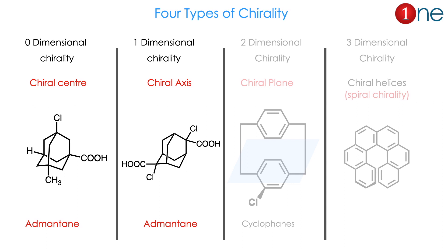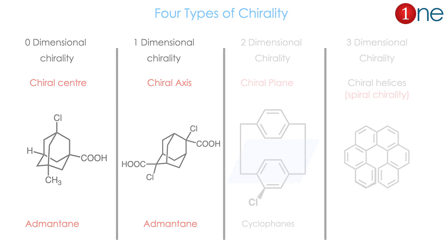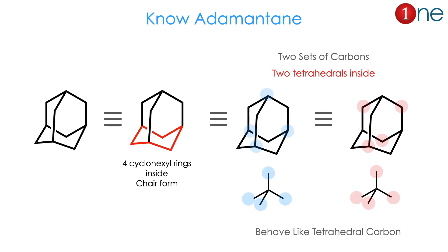We will see both cases of adamantane with chiral center and chiral axis. First, let us know adamantane. Adamantane is a simple cyclohexane derivative — normally four fused cyclohexane rings in the chair form. So adamantane is a stable system with all chair form. It has two chiral carbons inside, which are chiral centers. The alternative carbons, if you connect them, give a tetrahedral carbon. The atoms are spatially connected, not bond-wise connected. So you have two sets of tetrahedral carbons inside, and it behaves like a chiral carbon.